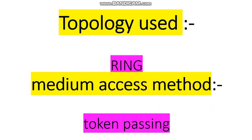The topology used in token ring is ring topology, and the medium access method used in token ring is token passing. Now, let us see how the token passing access method works and how it avoids collisions.